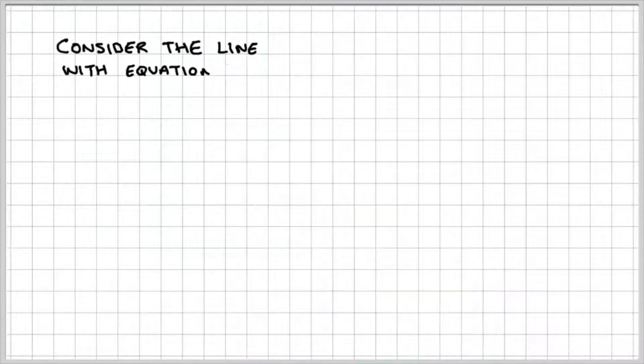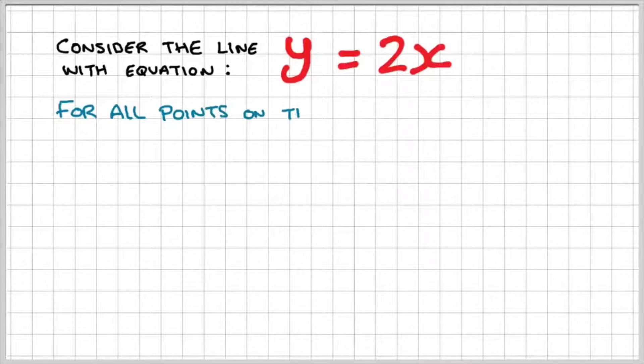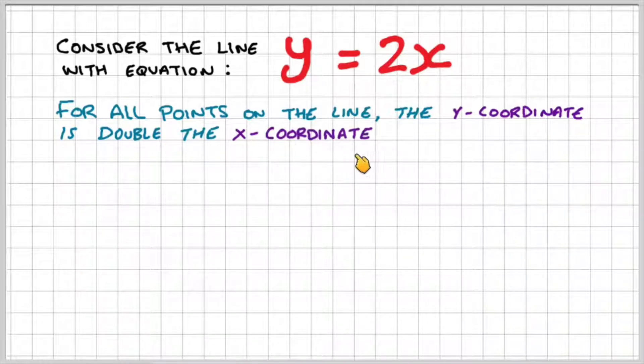So let's do an example where we consider the line with equation y equals 2x. What does it actually mean? It means for all the points on the line, the y-coordinate is double the x-coordinate. So if I had a y-coordinate of 4, then the x-coordinate would be 8. If the y-coordinate was negative 2, then the x-coordinate would be negative 4. And that would be true for all points on the line.